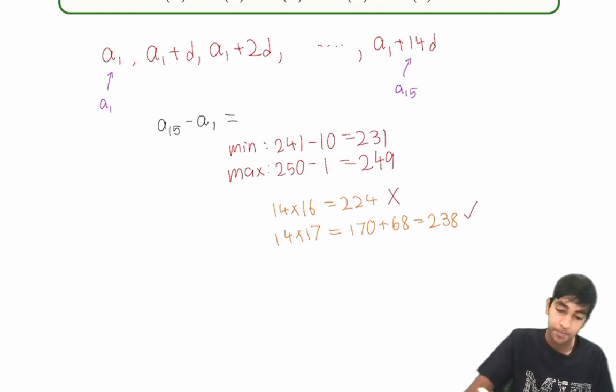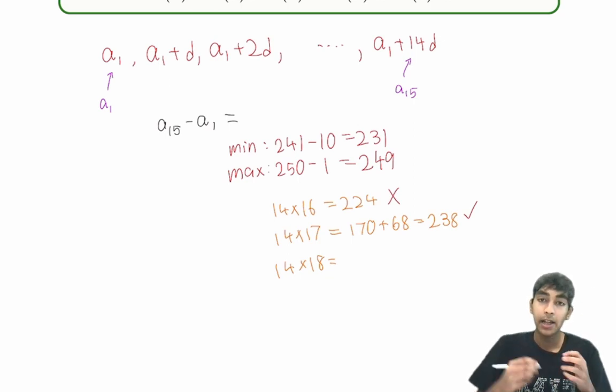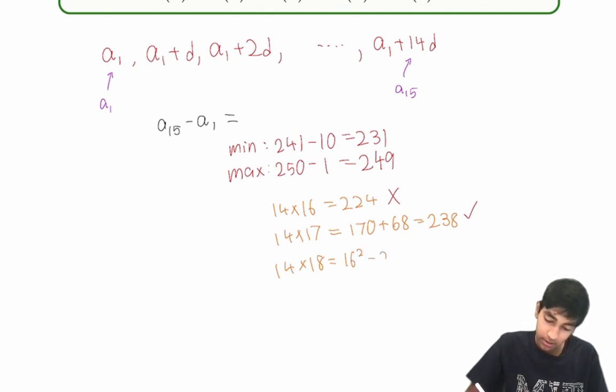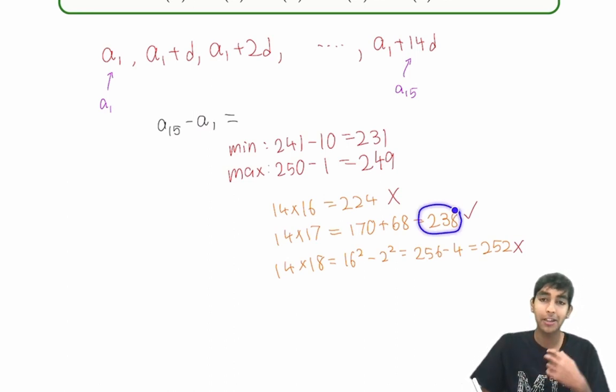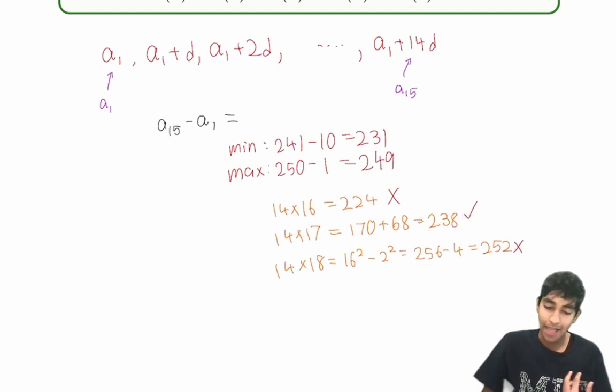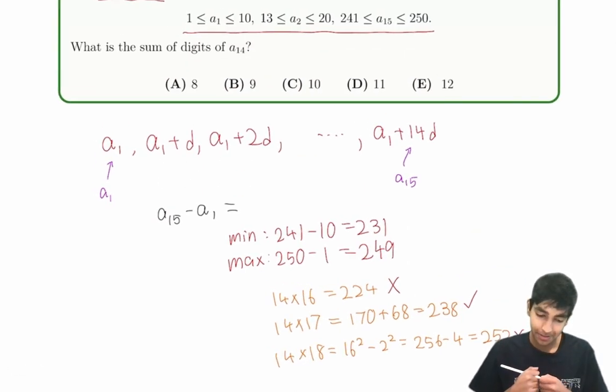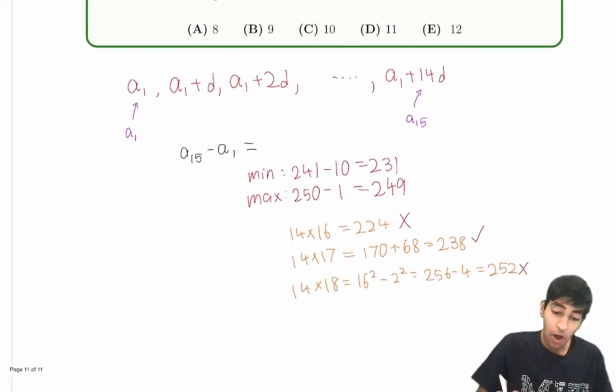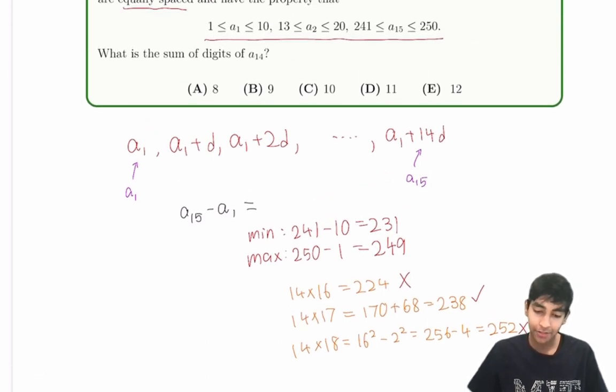Now what about 14 times 18? Is that too big? Another quick mental metric: 16 minus 2 times 16 plus 2, that's 16 squared minus 2 squared, that's 256 minus 4, 252. Oh, no, this is too big. Oh, wow, isn't that amazing? So we basically only have one possibility for a15 minus a1, and that is 238.